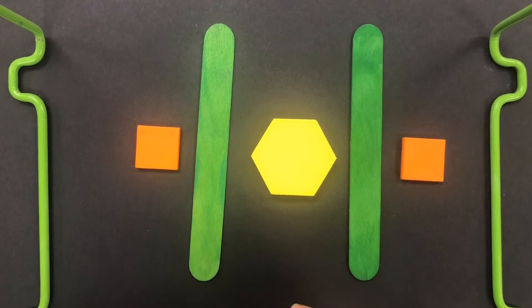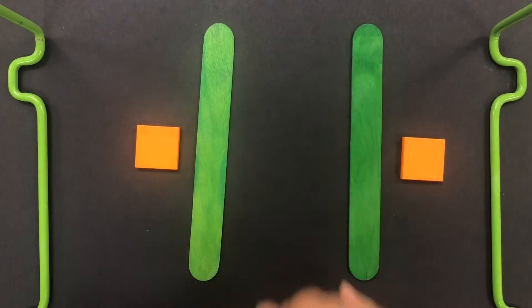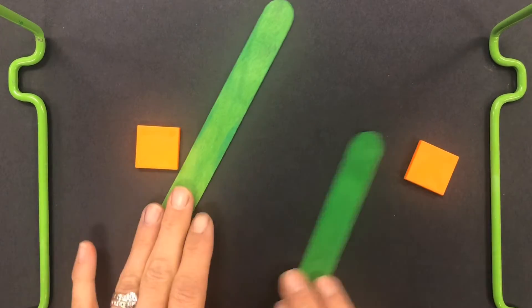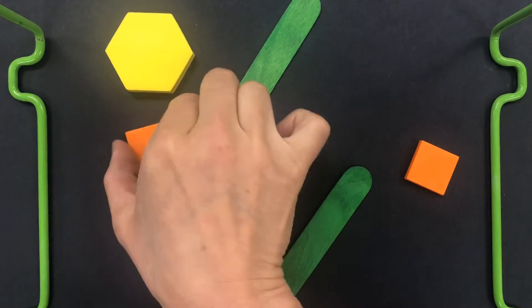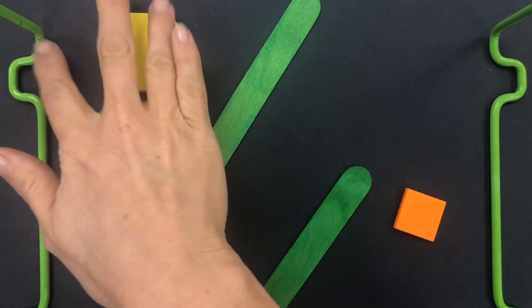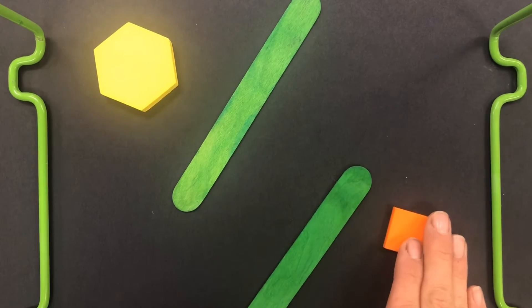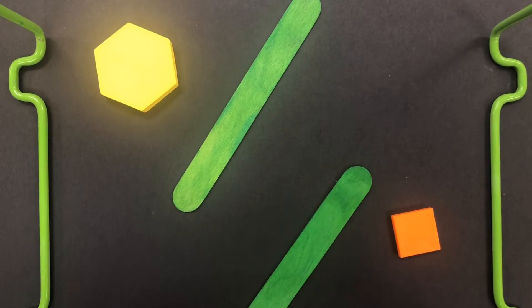Asymmetrical balance is when the objects are not balanced. Even though this composition is not balanced, there's still visual weight. The yellow shape and the orange shape still balance out the picture.